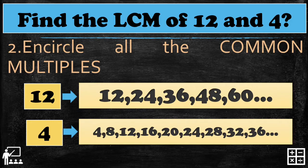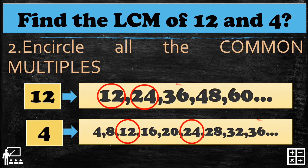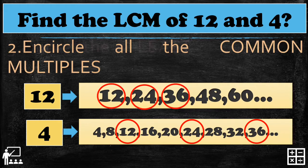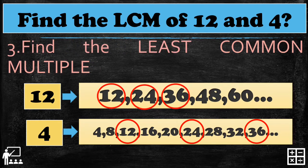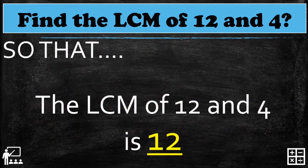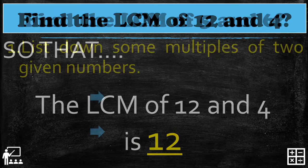Step 2: circle all the common multiples. The common multiples of 12 and 4 are 12, 24, and 36 — the list can be extended, but on my list there are three common multiples. Step 3: find the least common multiple. The smallest number among the common multiples is 12, so the LCM of 12 and 4 is 12.